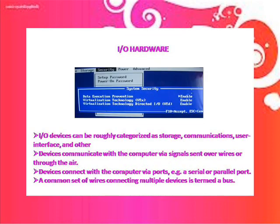Input-Output devices can be roughly categorized as storage, communication, user interface, and other. Devices communicate with the computer via signals sent over wires or through the air. Devices connect with the computer via ports, e.g. a serial or parallel port. A common set of wires connecting multiple devices is termed a bus.